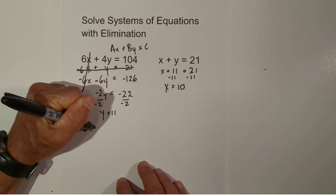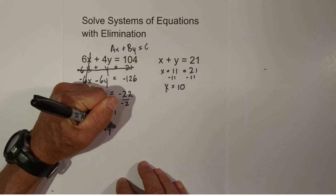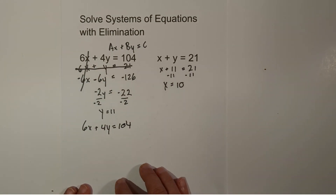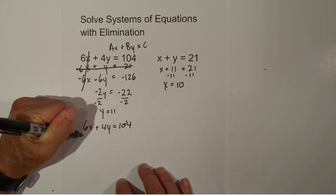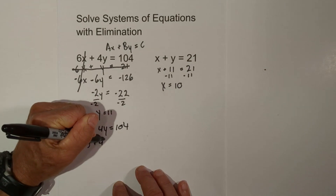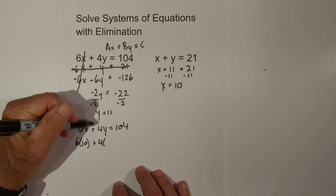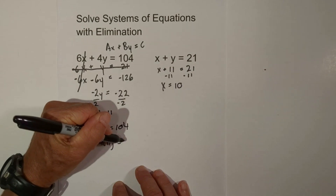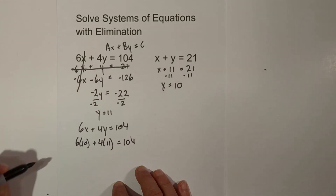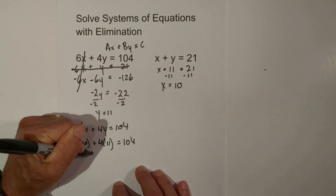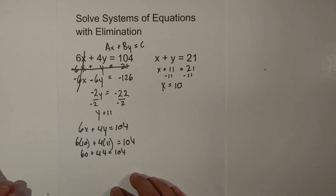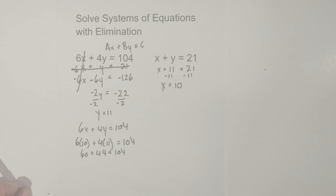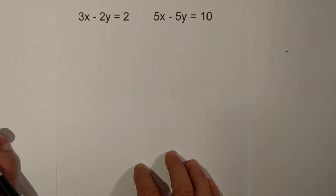Now let's check our work by plugging x = 10 and y = 11 into the second equation. We get 6 times 10 plus 4 times 11, which is 60 plus 44, and it does indeed equal 104. Our answer is correct.